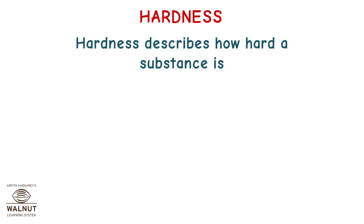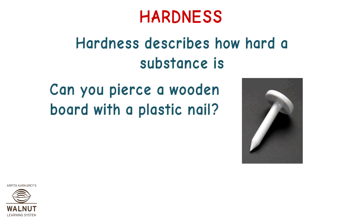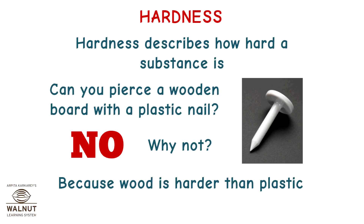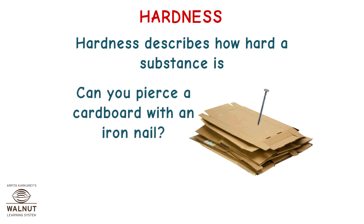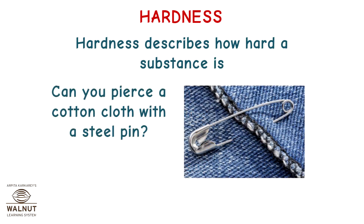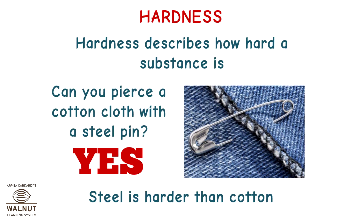Hardness describes how hard a substance is. Can you pierce a wooden board with a plastic nail? No — because wood is harder than plastic. Can you pierce a cardboard with an iron nail? Yes, because iron is harder than cardboard. Can you pierce a cotton cloth with a steel pin? Yes — steel is harder than cotton.